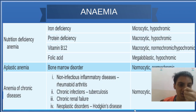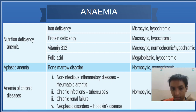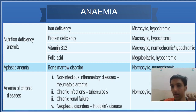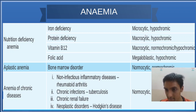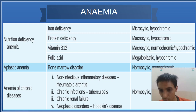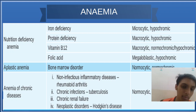Next is nutritional deficiency anemia. Deficient factors include iron, protein, B12, and folic acid — all required for heme synthesis. Iron deficiency gives microcytic hypochromic anemia. Protein deficiency is also hypochromic. B12 deficiency is macrocytic. Folic acid deficiency also tends to be macrocytic, and importantly, folate deficiency causes megaloblastic anemia.